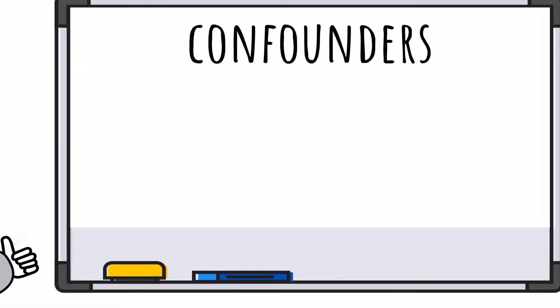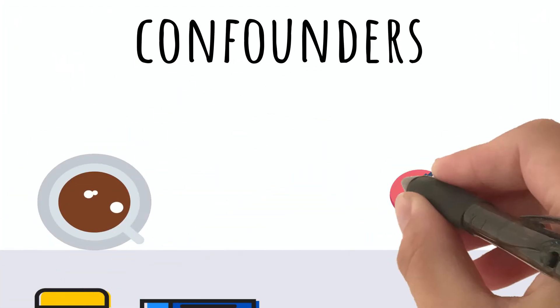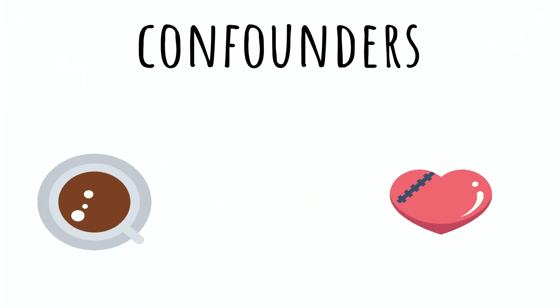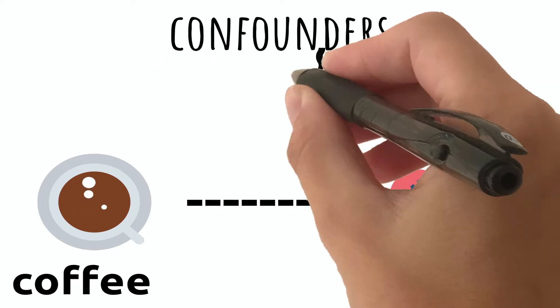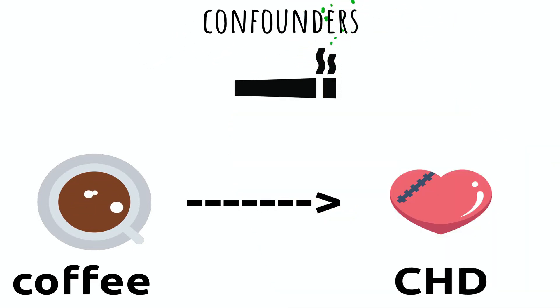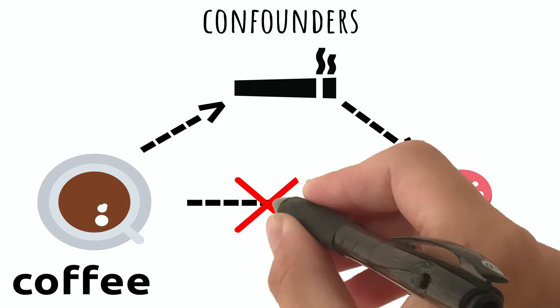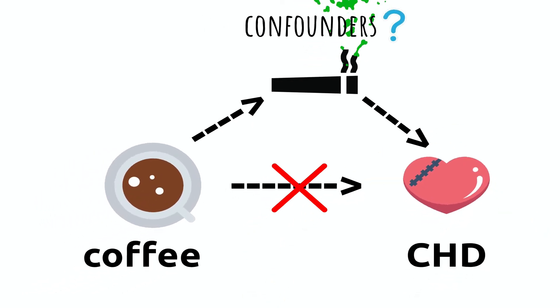For example, suppose a study suggests people who drink more coffee are more likely to develop CHD. It would be tempting to conclude that coffee leads to CHD. But people who drink coffee also tend to smoke. Smoking is a confounder here because it is associated with both coffee and CHD. It can make it look like coffee causes CHD if we don't take smoking into account.